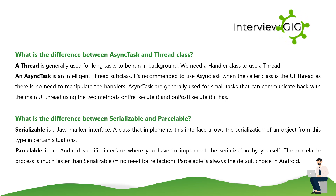What is the difference between AsyncTask and Thread class? A Thread is generally used for long tasks run in the background and requires a Handler class. AsyncTask is an intelligent Thread subclass recommended when the caller is a UI thread, as there is no need to manipulate handlers. AsyncTask is generally used for small tasks that can communicate back with the main UI thread using the methods onPreExecute and onPostExecute.